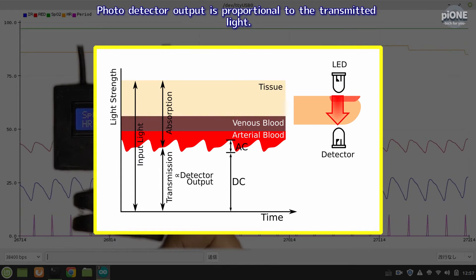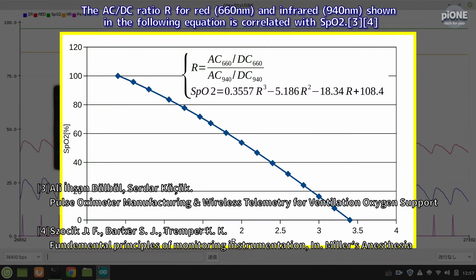Photodetector output is proportional to the transmitted light. The AC-DC ratio for red, 660 nanometers, and infrared, 940 nanometers,